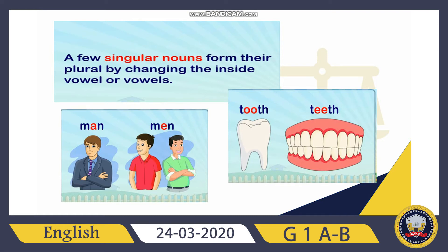But a few singular nouns form their plural by changing the vowel inside. For example: one man becomes men, one tooth becomes teeth, and one woman becomes women. These are irregular plurals.